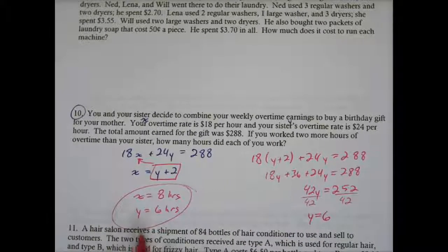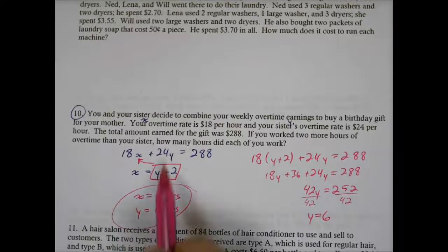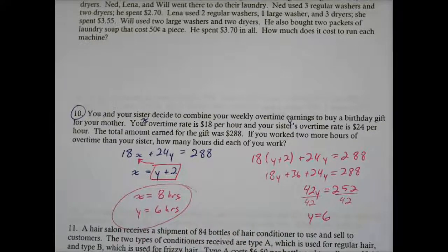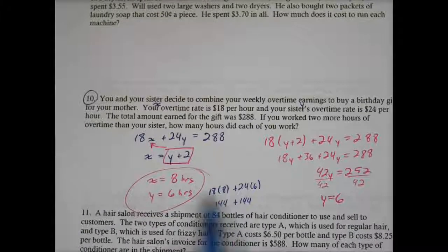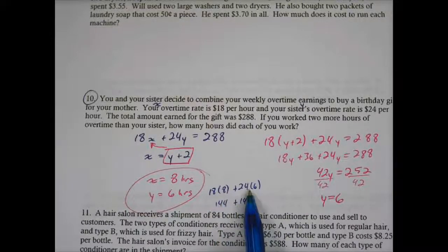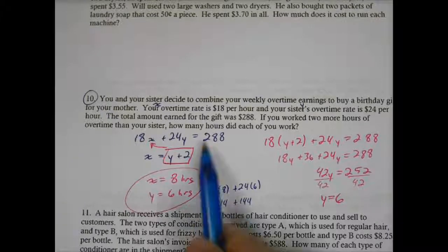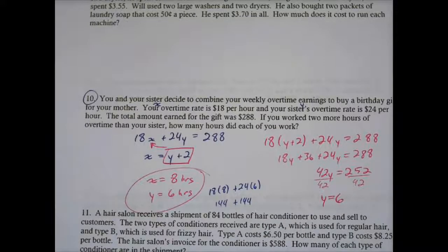You can always check that too. You can plug it into this function. So 18 times 8 plus 24 times 6 should be 288. If you substitute X and Y, we should have 18 times 8 plus 24 times 6. 144 plus 144 is definitely 288. So again, if you guys have two systems or two functions, two equations with two variables, you guys can solve these.